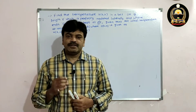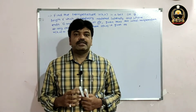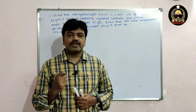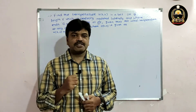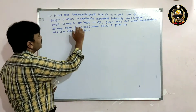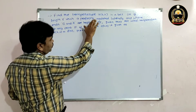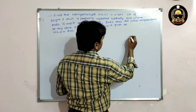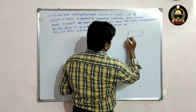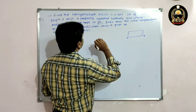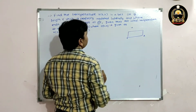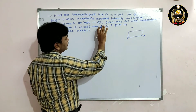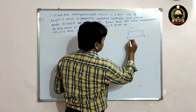Good morning friends. In this lecture I'm going to discuss the problem on the one-dimensional heat flow equation. Find the temperature u(x, t) in a bar — there is a bar from O to A — of length L which is perfectly insulated laterally.